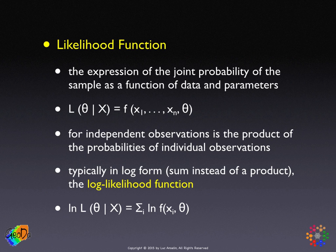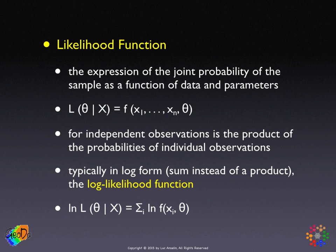The key concept is the likelihood function, which is essentially another word for the joint probability of the sample. This likelihood approach thinks of the sample as a function of the data and the parameters, but we maximize over the parameter — the unknown we solve for. In the classical approach, the likelihood is written as a conditional upon the data: the likelihood for parameters theta conditional upon the data.